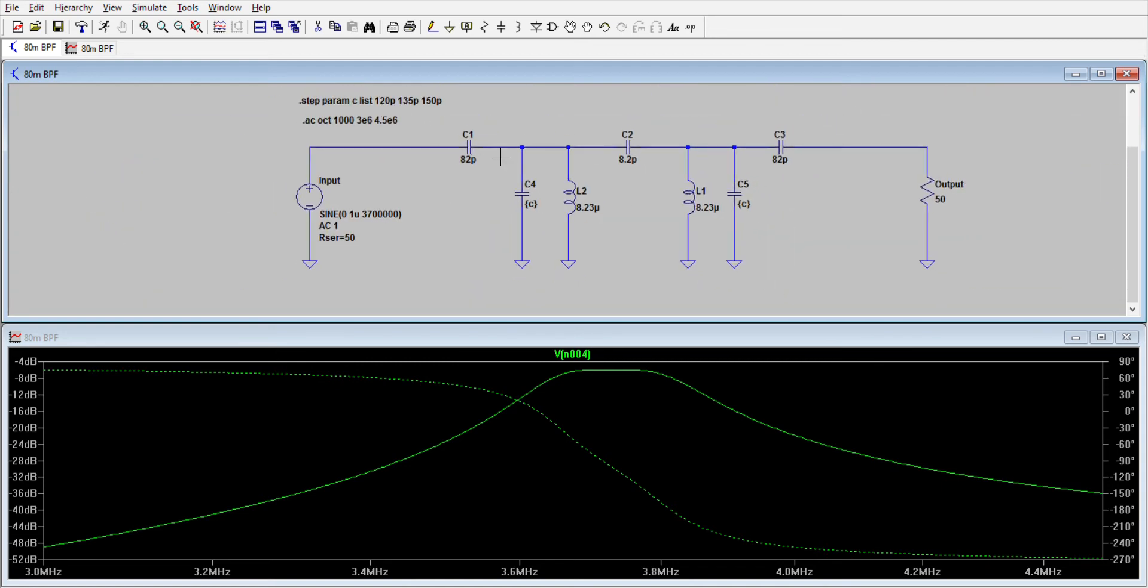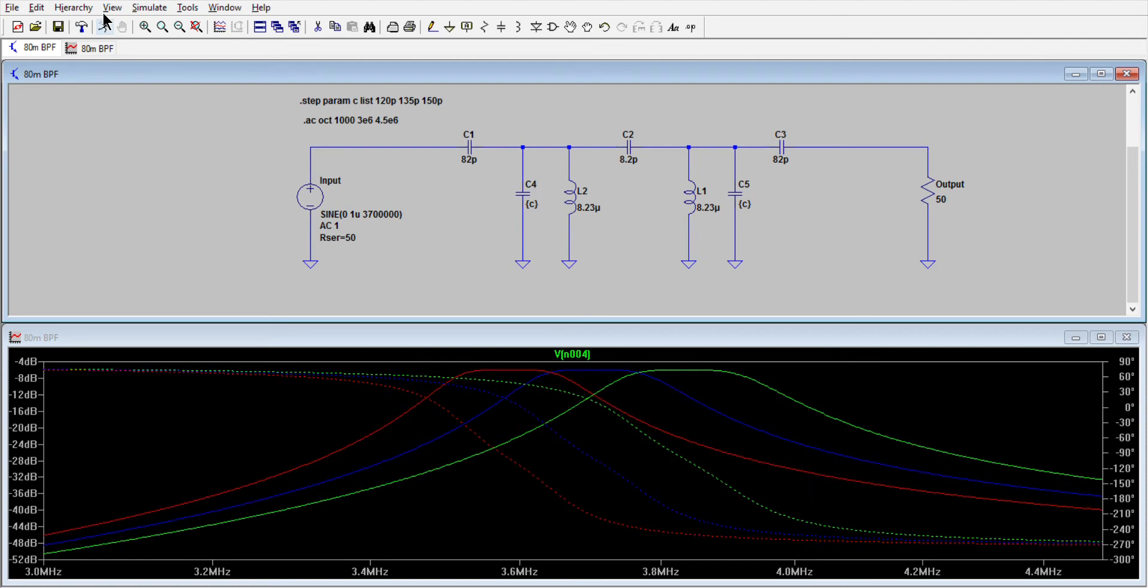So what happens now, when I do the simulation, we should get, and let's simulate now, three plots. We've got the red plot there, the blue plot, and the green plot. And as you can see there, we have indeed pulled that pass band using three different values of capacitor, or capacitance, across the whole band.